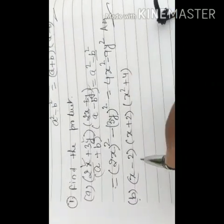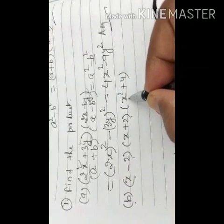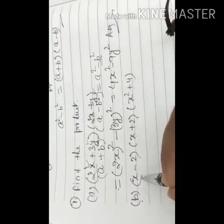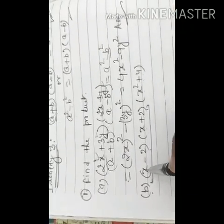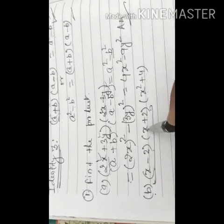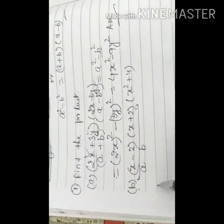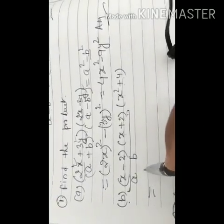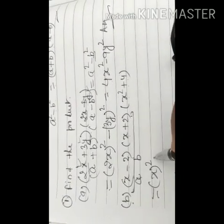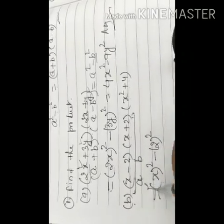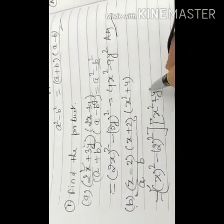Let us take one more example: (x − 2)(x + 2)(x² + 4). We take the first two expressions and find their product. It is in the form of a minus b multiplied by a plus b, where a equals x and b equals 2. Therefore we can apply a squared minus b squared, giving x squared minus 2 squared, and put the third term (x² + 4) as it is in the product.